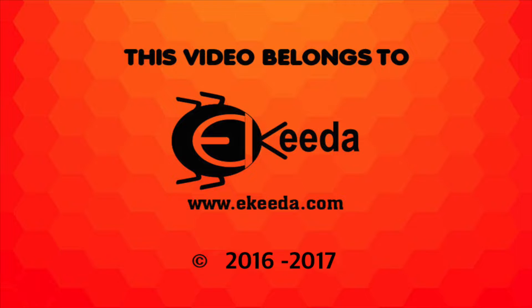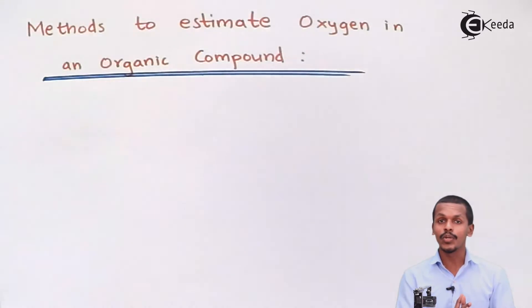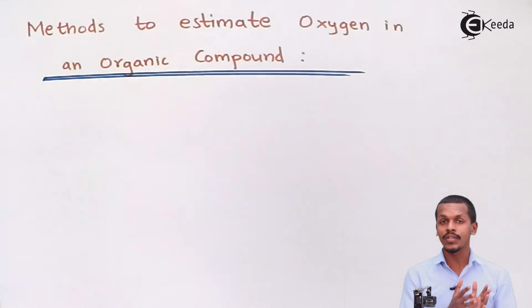Hello friends. In the last lecture we studied how to detect the percentage of phosphorus present in an organic compound and we also did a numerical based on that. Now we are going to look at the methods to determine the percentage of oxygen present in an organic compound.